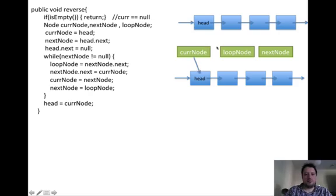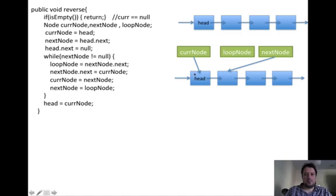The next node will point to the next element. And because we have to reverse the linked list, this means that the first element will have to point to null, because this will actually be the end — the last element. So that's why we are changing the pointer of the head element to point to null.